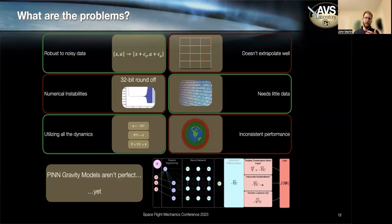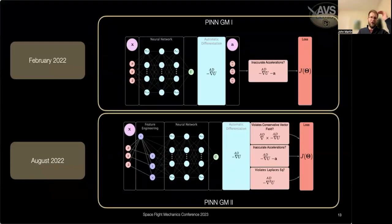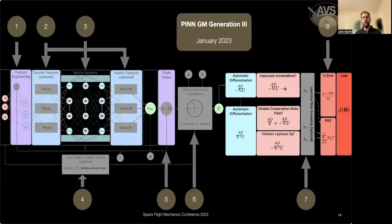But that left us still with issues like these networks didn't extrapolate very well. They had numerical instabilities and they had somewhat inconsistent performance at different altitudes. So the progression was PINN gravity model one in early 2020, some exciting initial findings, but a lot of drawbacks. PINN gravity model two solving some of them in mid 2022. And today we'd like to introduce PINN gravity model three, which tries to solve all of the remaining issues that PINN gravity model two wasn't able to figure out.